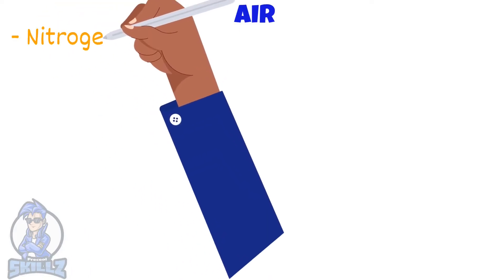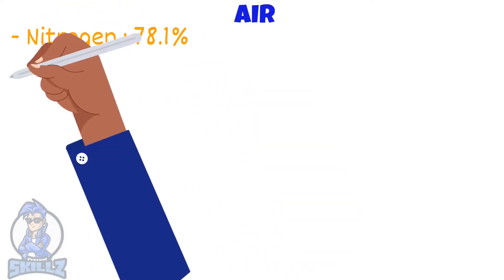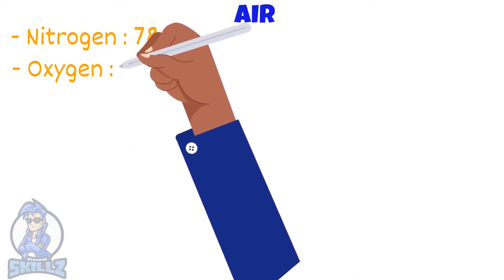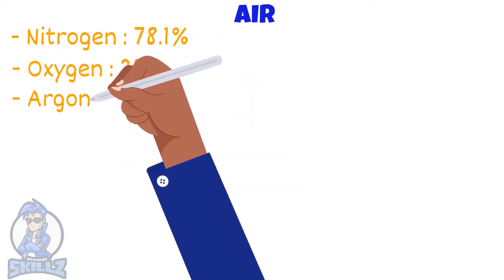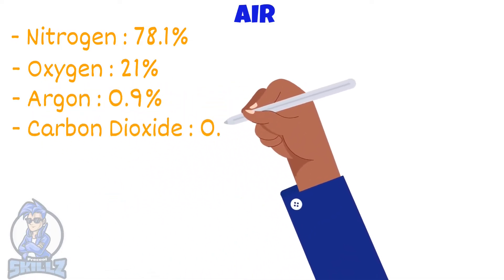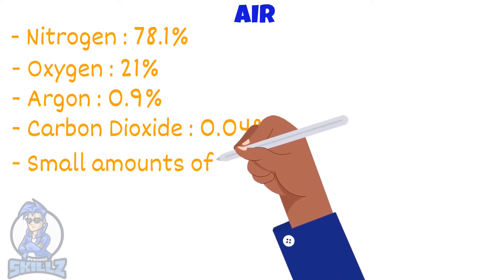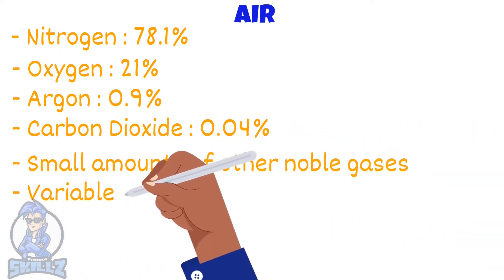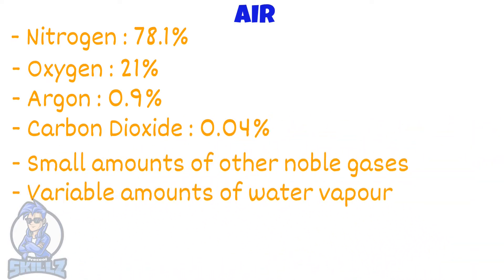First, we'll take a look at the approximate percentages of the four most abundant gases in the atmosphere: Nitrogen at 78.1%, Oxygen at roughly 21%, Argon at 0.9%, and Carbon dioxide at 0.04%. There are also very small amounts of other noble gases and variable amounts of water vapor.